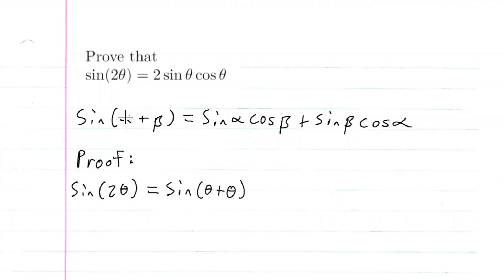Now we can use the sum of angles formula where alpha is theta and beta is theta. So we'll have sine theta cosine theta plus sine theta cosine theta.